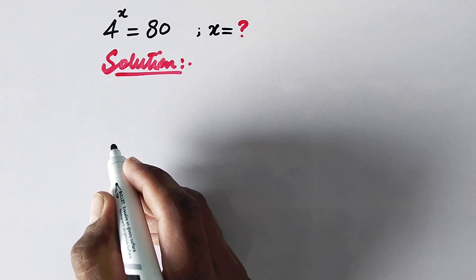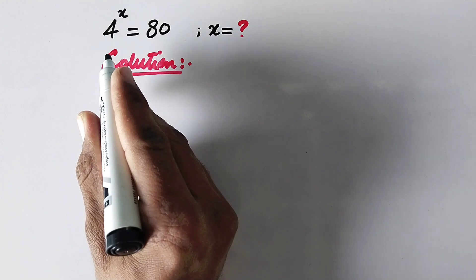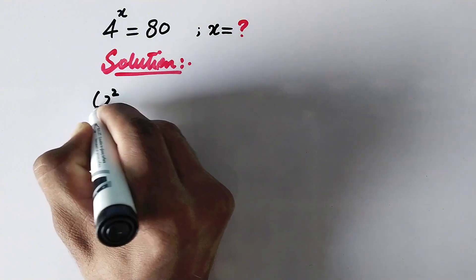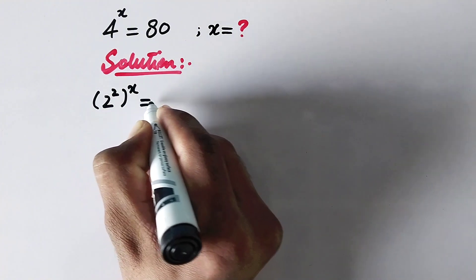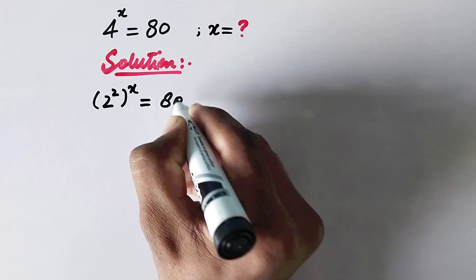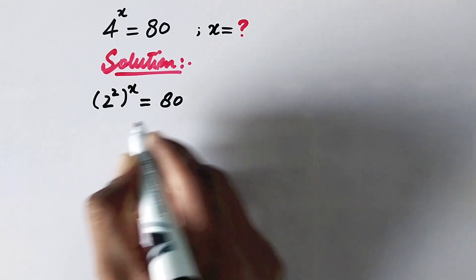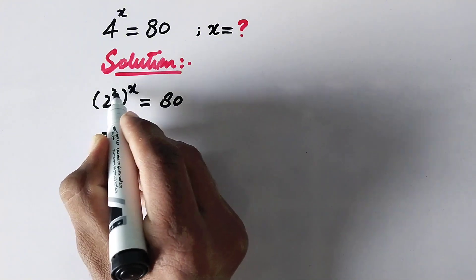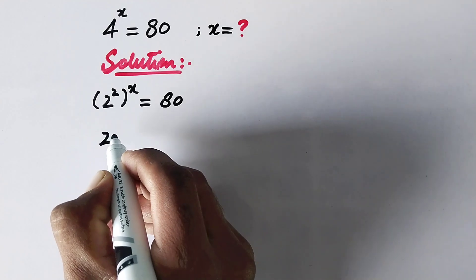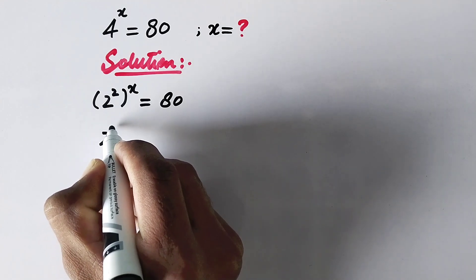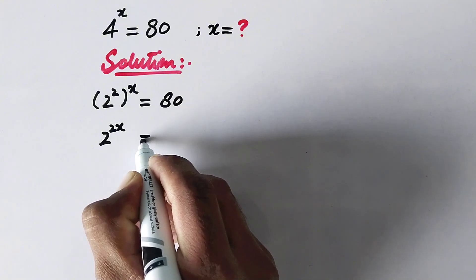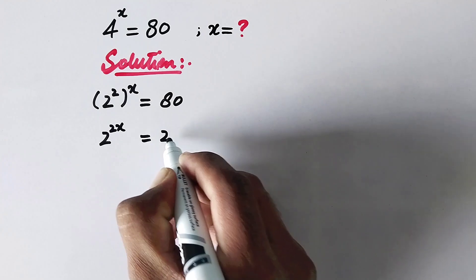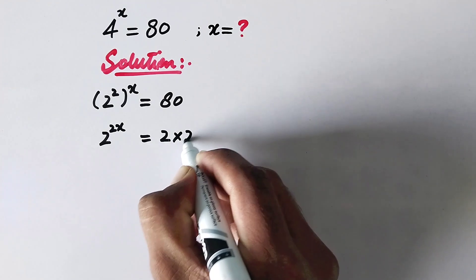In the first step, we can write 4 as 2 squared. So 2 squared to the power x is equal to 80. In the next step, this power can be multiplied — as this is a rule of exponents — so here it will be 2 to the power 2x is equal to 80.